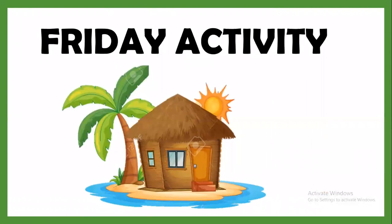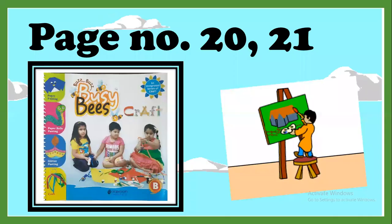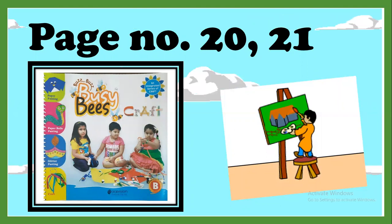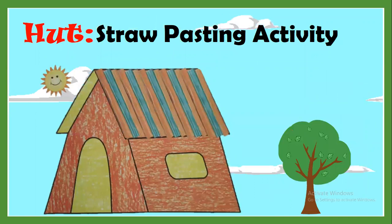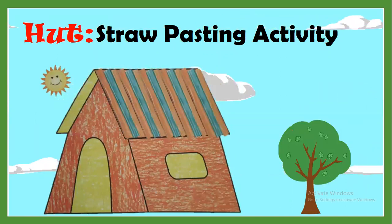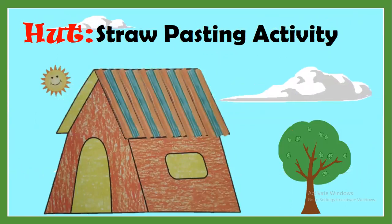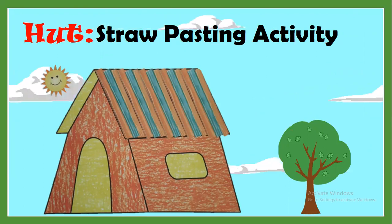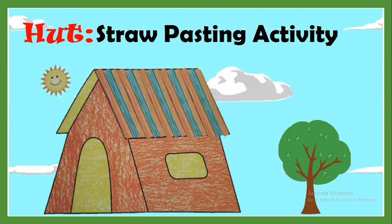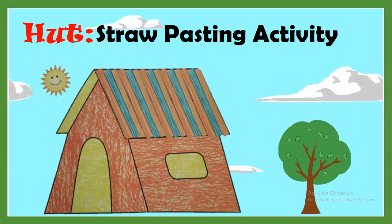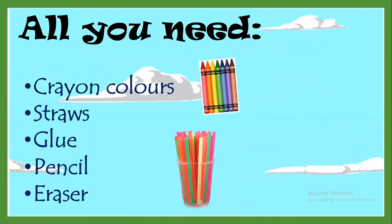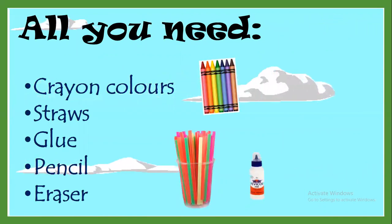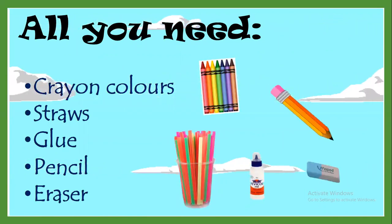Friday activity, page number 20 and 21. We are going to do it in Easy Bees Craft Book. We are going to make a hut — straw pasting activity. You can see the straws are stuck on the roof of the hut. All you need are crayon colours, straws, glue, pencil and eraser.